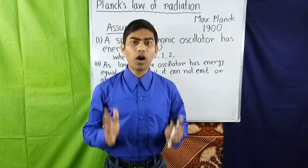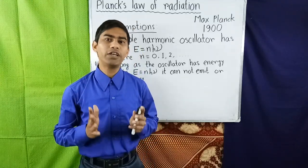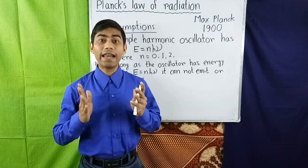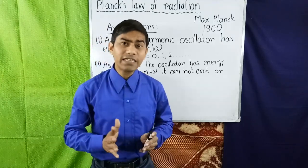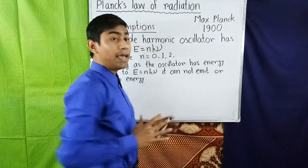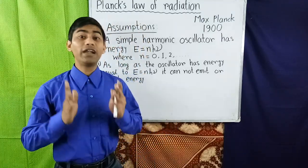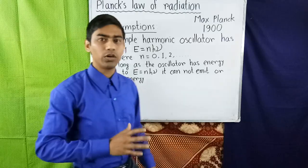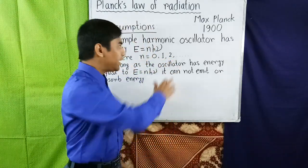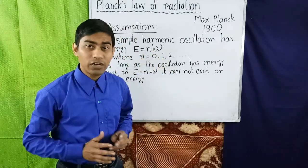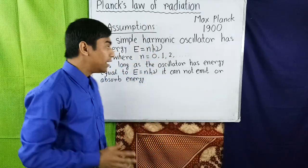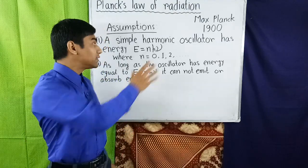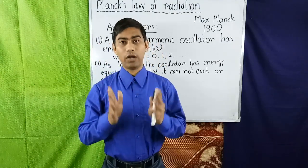He assumed that atoms in the walls of a black body behave like simple harmonic oscillators, and each has a characteristic frequency of oscillation. In his theory, he made two radical assumptions about atomic oscillators. The first assumption is that a simple harmonic oscillator cannot have any arbitrary values of energy, but only those values of total energy E given by the relation E equals n·h·ν, where n equals 0, 1, 2, 3... n is called the principal quantum number, h is Planck's constant, and ν is the frequency of oscillation. The quantity h·ν is the basic unit of energy called the quantum of energy. This relation shows that the total energy of an oscillator is quantized.